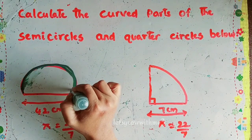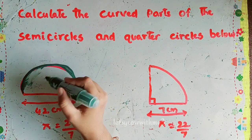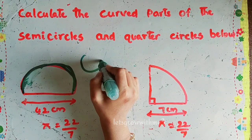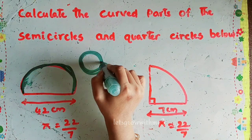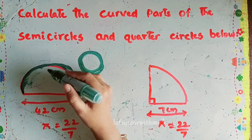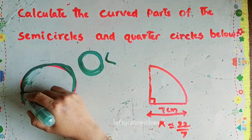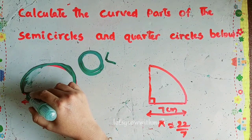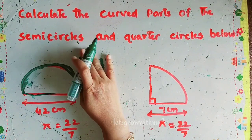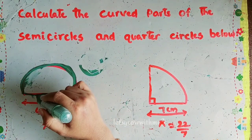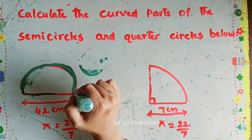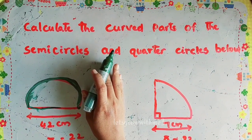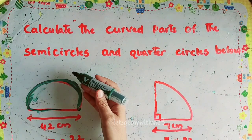For a full circle, circumference and perimeter are the same. But for a semicircle, the perimeter is different — you need to add the curved part plus the horizontal diameter line. Similarly for a quarter circle, you add the curved part plus both straight edges. Here they are asking only for the curved part, which is simply half of the circumference.